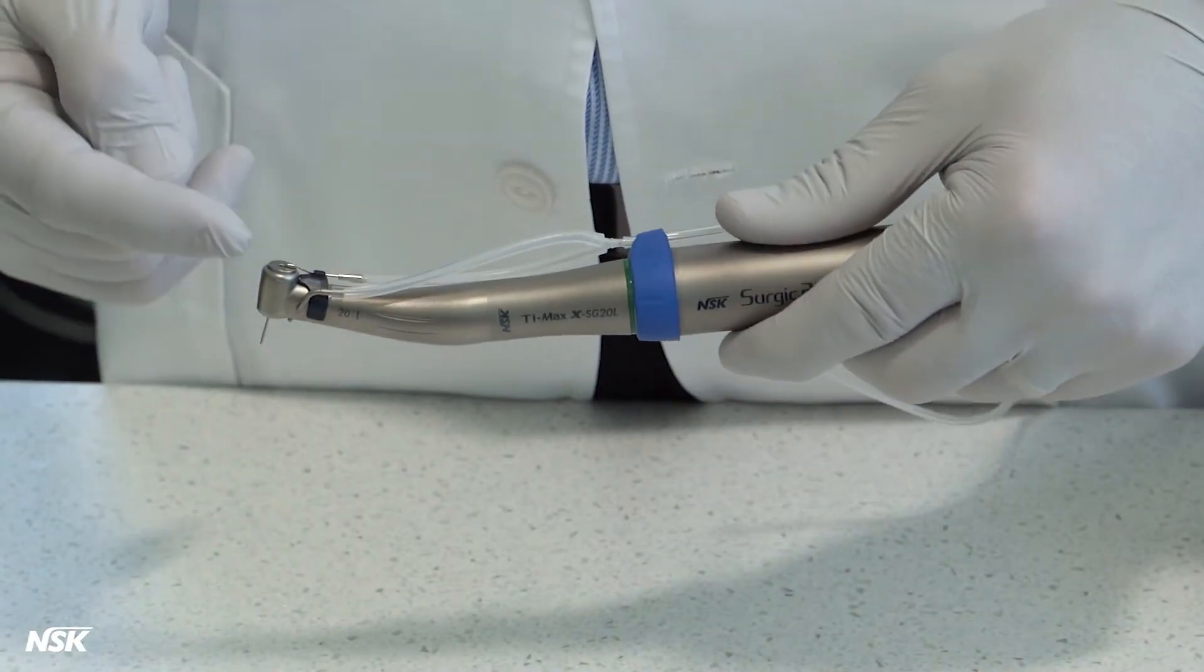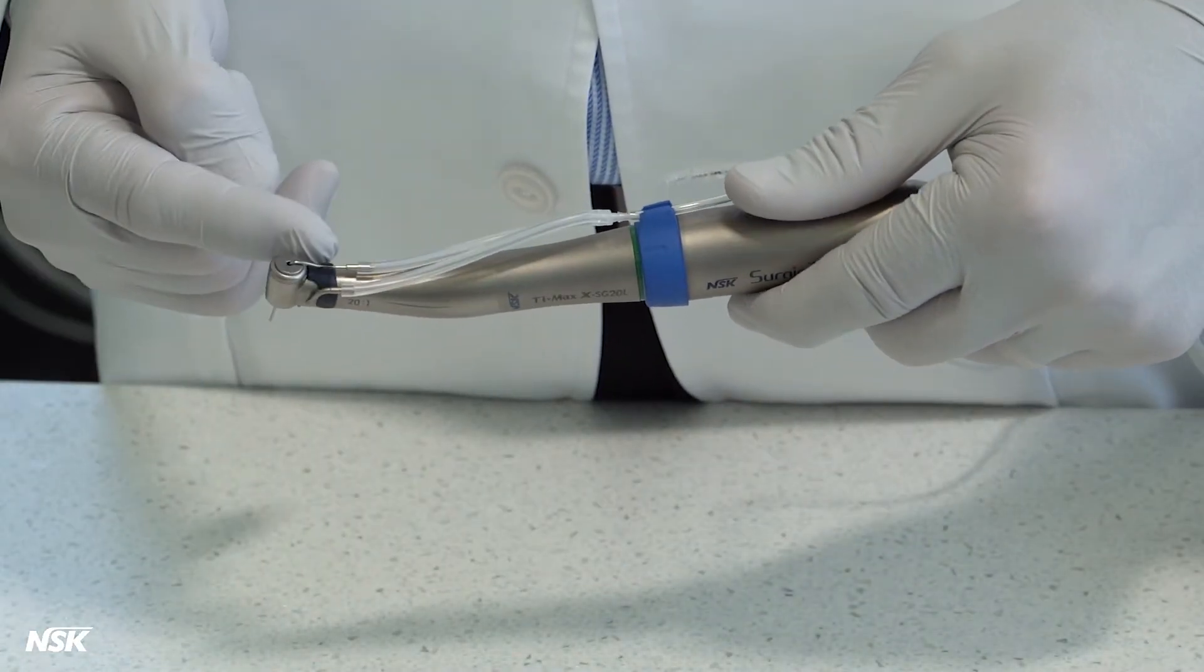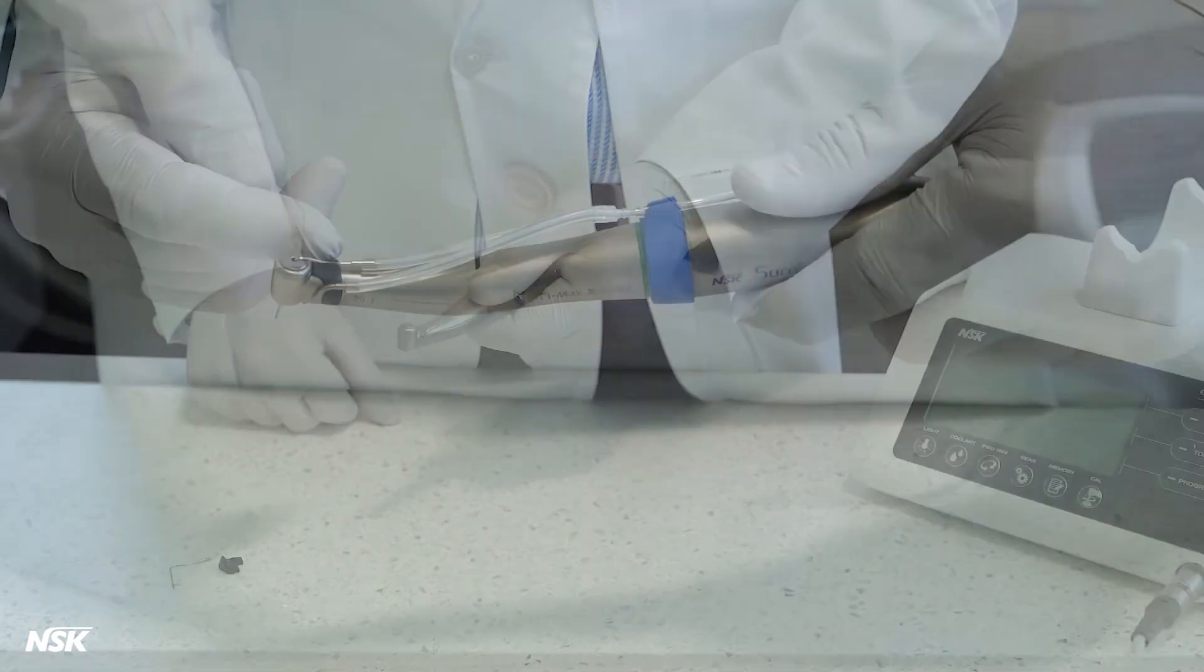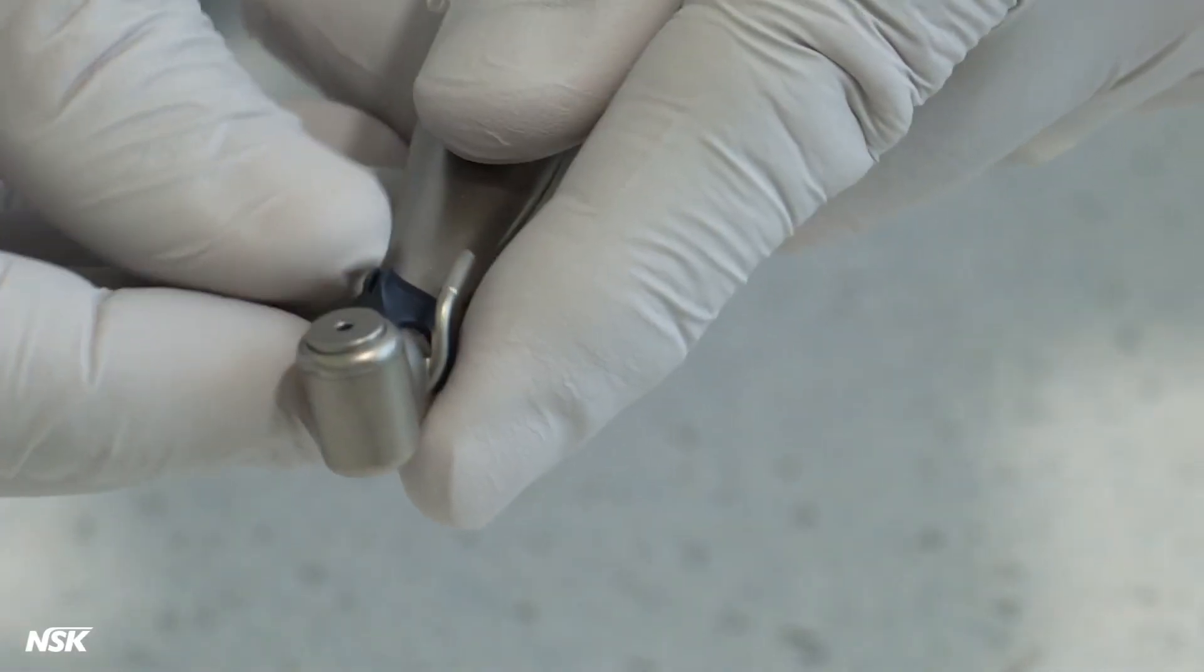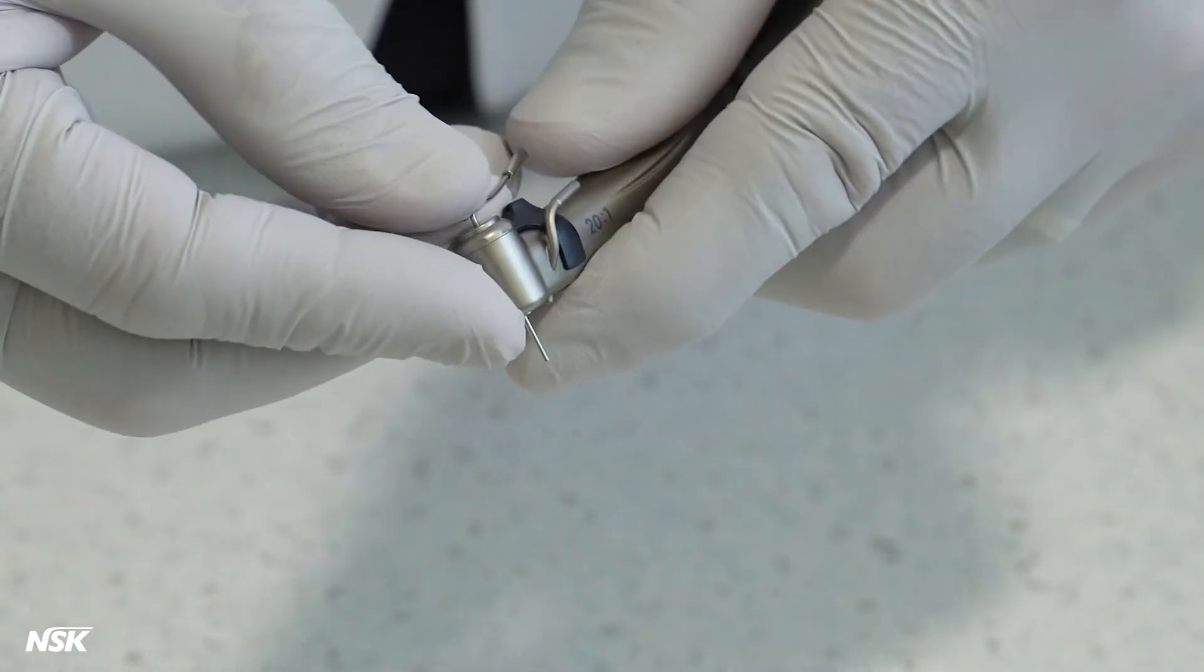If you need dual irrigation, use the internal spray nozzle in addition to the Y connector. The internal spray nozzle is mounted on the neck of the attachment. Using the black holder, with a slight push, it will click into place.